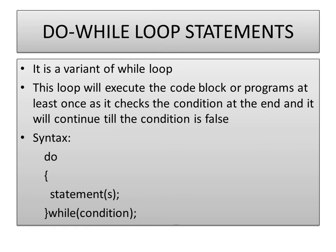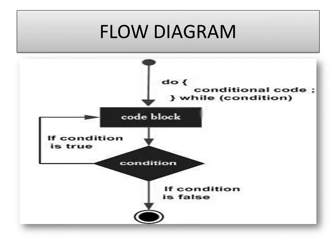Next is the do-while loop statement. It is a variant of the while loop. Here it is an exit control loop, so the code block will be executed at least once, and at the end it will check the condition. It will continue till the condition becomes false. This is the syntax: do, followed by the statements — the body of the do loop — and while is written at the end followed by a semicolon: while (condition). The flow diagram shows: execute the code block first, then it is approached by the condition. If true, execute the code block again and the cycle repeats. If false, go to the next statement.